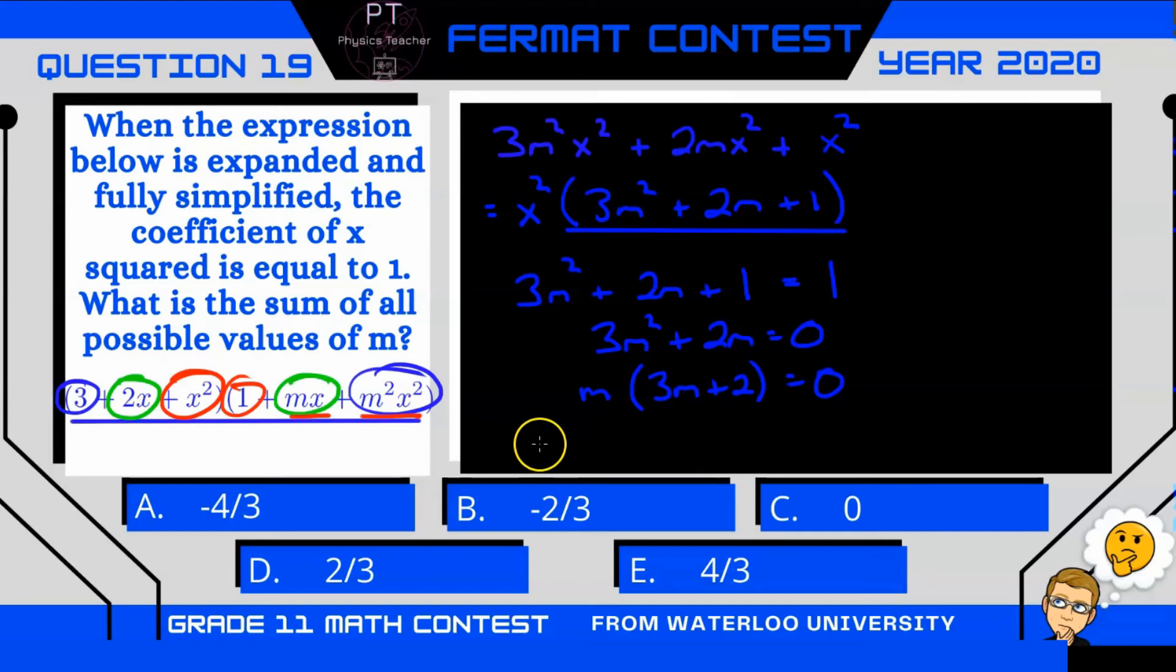So m has two solutions here. m can be 0, or m can be minus 2 thirds. So our answer, if we add 0 and minus 2 thirds, is B.